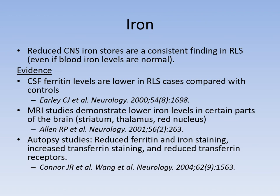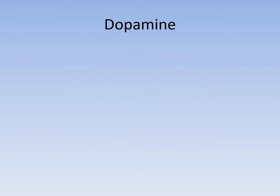Evidence includes autopsy studies showing reduced ferritin and iron staining in certain parts of the brain. It's not simply iron deficiency — it's the fact that there is reduced transfer of iron to the brain. Typically you would up-regulate transferrin receptors in iron deficiency, suggesting a more complicated process than simple lack of availability of iron.